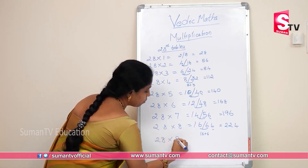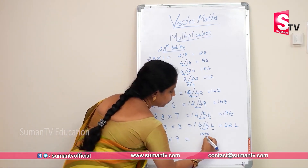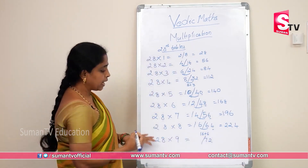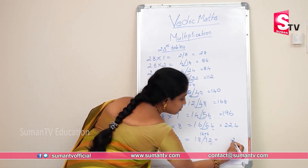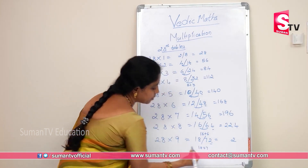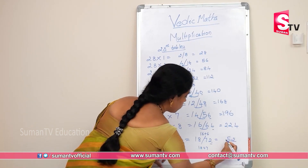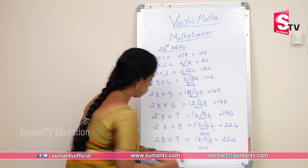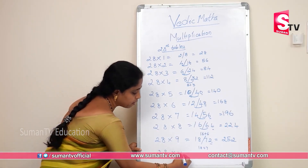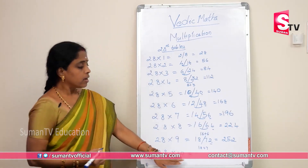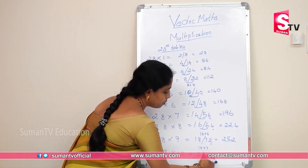28×9: 9×8 is 72. 9×2 is 18. Write 2 in unit place; 18 plus 7 — that is 252. 28×10: we write 280. They will be writing it out.